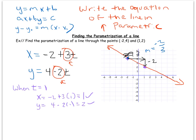However, there are other valid parametrizations. Following the slope pattern — right three and down two again — we get to another point on the line: four, zero.